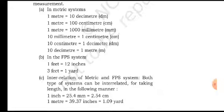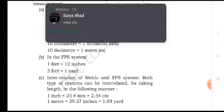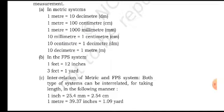In metric system, 1 meter equals 10 decimeter. 1 meter is also equal to 100 centimeter (cm). 1 meter equals 1000 millimeter (mm), and 10 millimeter equals 1 centimeter. Similarly, 10 centimeter equals 1 decimeter, and 10 decimeter equals 1 meter.